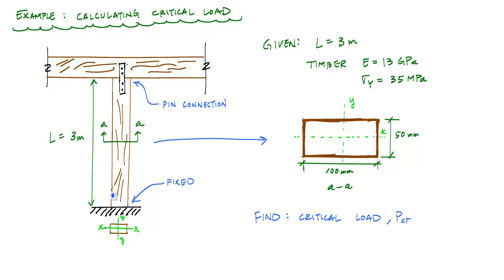And the other information that's given to us is that we have timber. And it's got a modulus of elasticity of 13 gigapascals and a yield strength of 35 megapascals.